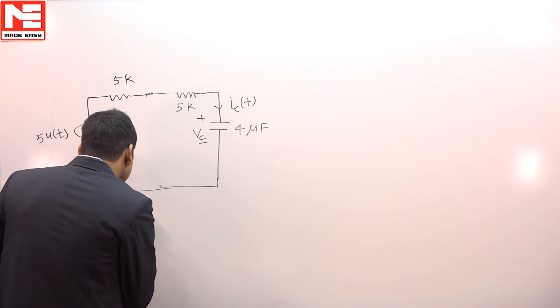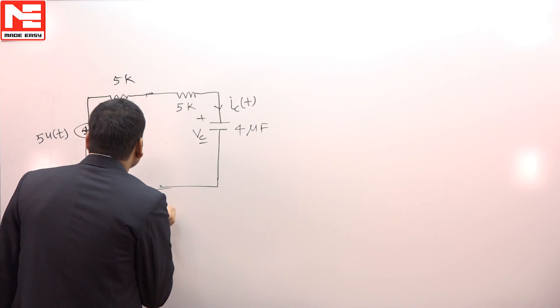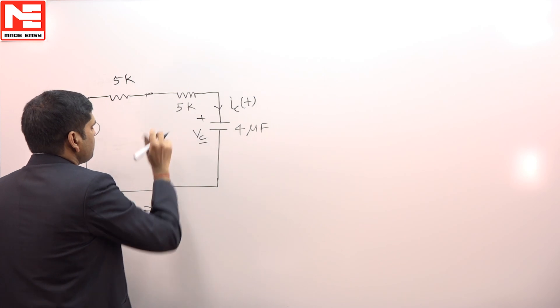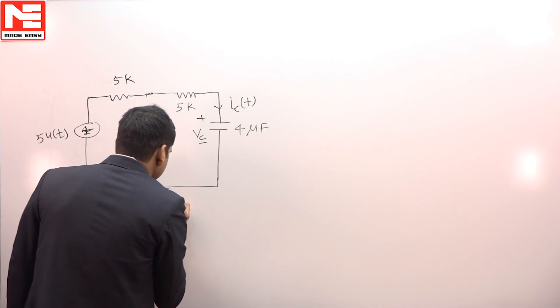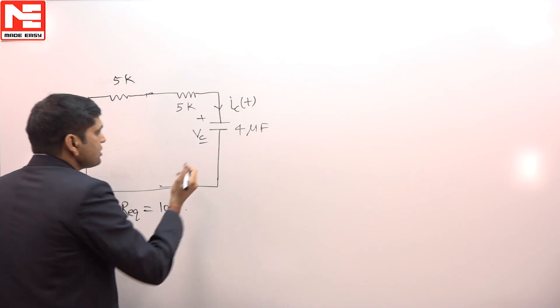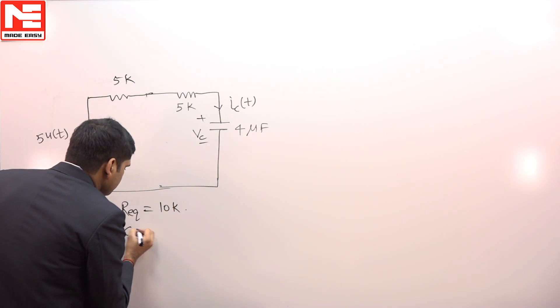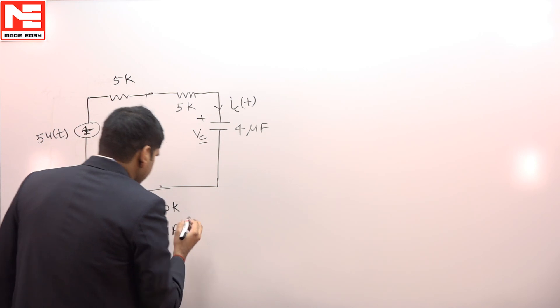For this circuit, R equivalent is equal to 5 plus 5, that is 10kΩ, and C is equal to 4µF.